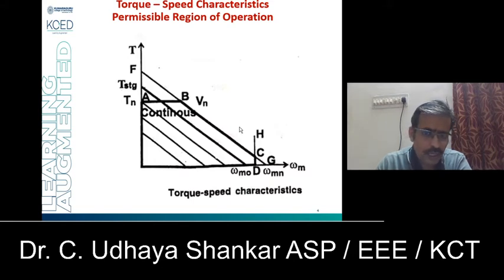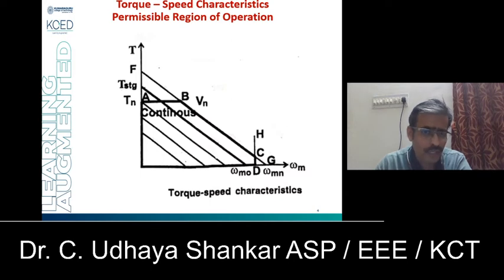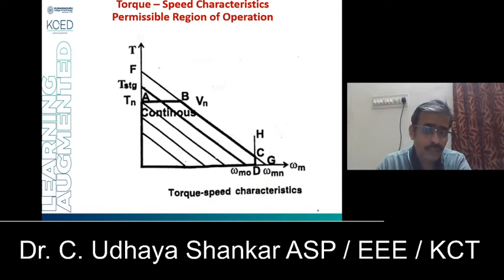The BLDC machine has some constraints. There are three different constraints. The first one is that the continuous current should not exceed the permissible current limit. For any BLDC machine, your continuous current should never exceed the permissible current limit. From this we must understand that the torque also should not exceed KT multiplied by IN, where KT is the torque constant and IN is the maximum permissible current.